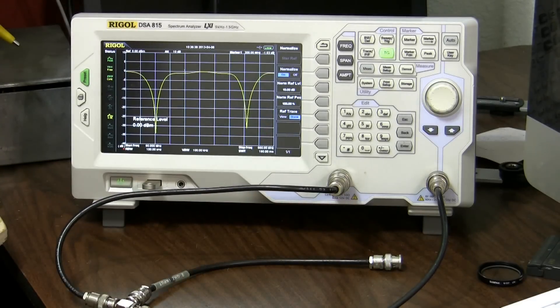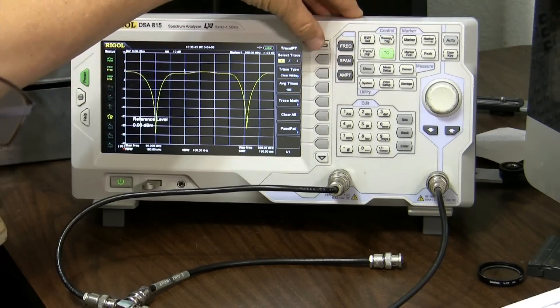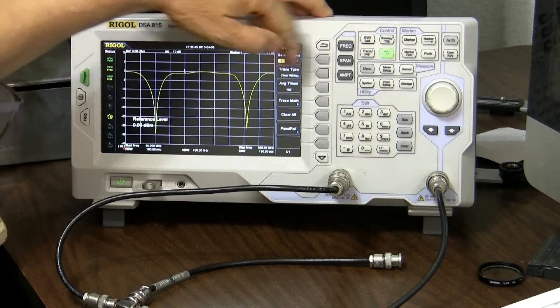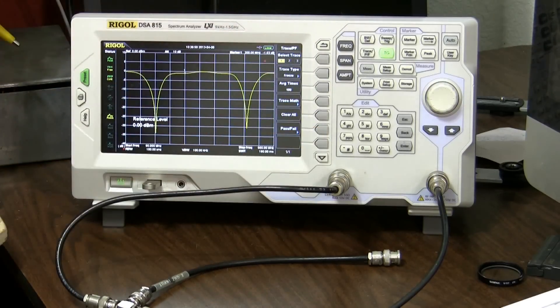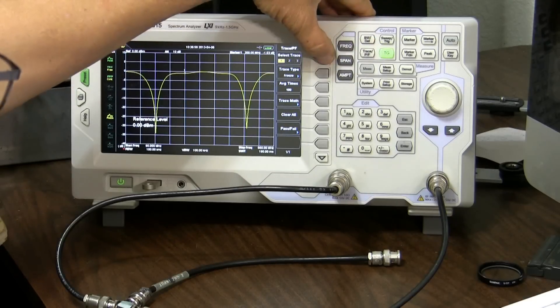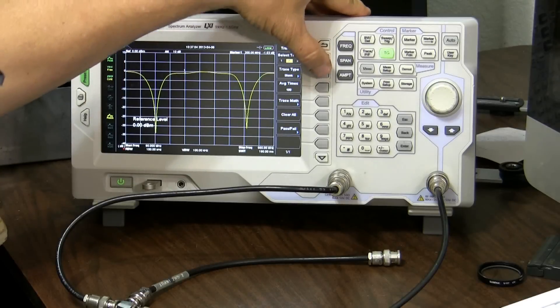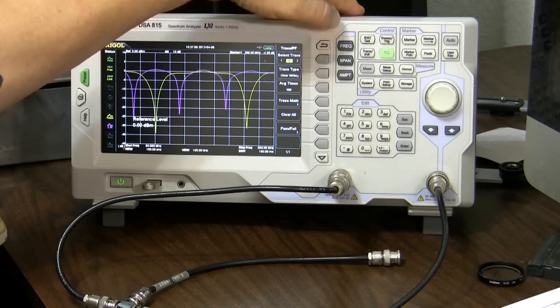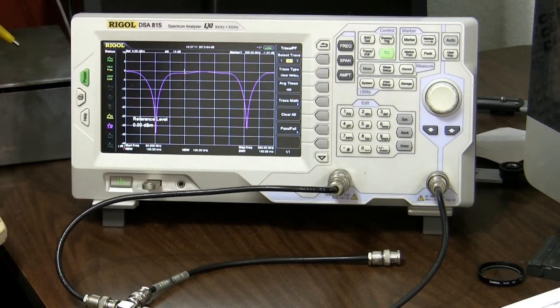Now let's save that particular one so I'll come up here to trace and the trace type. I'm going to save it but we want to see it so instead of blanking it I'll hit freeze and now that display is frozen. Then I'll go back to trace here, actually I'll just step over to the second one which is presently blank and we'll make that clear right and as you see it is right over the top of the other saved trace.